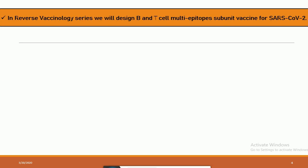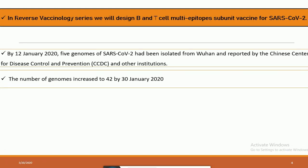So in this lecture in the reverse vaccine analogy series we will be designing B and T cell multi-epitope subunit vaccine for SARS coronavirus. Before we move on to designing the B and T cell multi-epitope subunit vaccine for SARS coronavirus 2, we will talk a little bit about SARS coronavirus and its proteins.